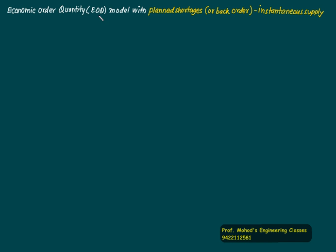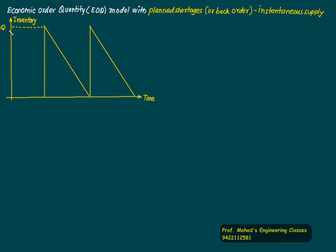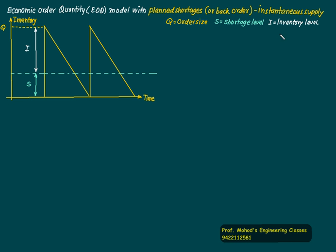This is the Economic Order Quantity (EOQ) model with planned shortages or back orders, and we have instantaneous supply. Q represents the order size. The horizontal line represents the shortage level S. I represents the inventory level, and I plus S equals Q — so order size Q equals inventory plus shortage.